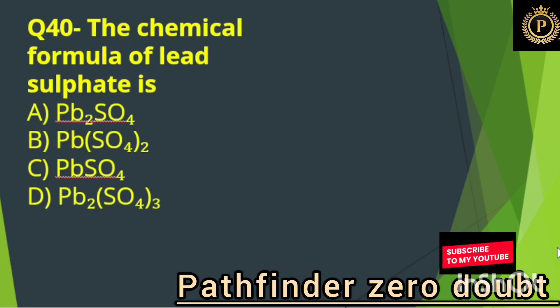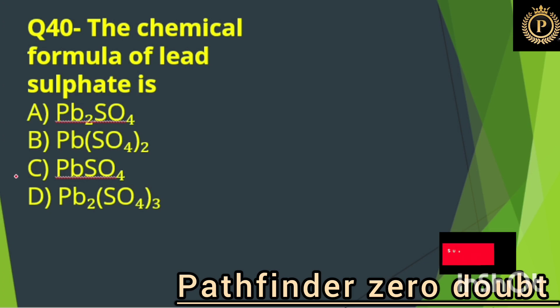The chemical formula of lead sulphate is: Option C, PbSO4.